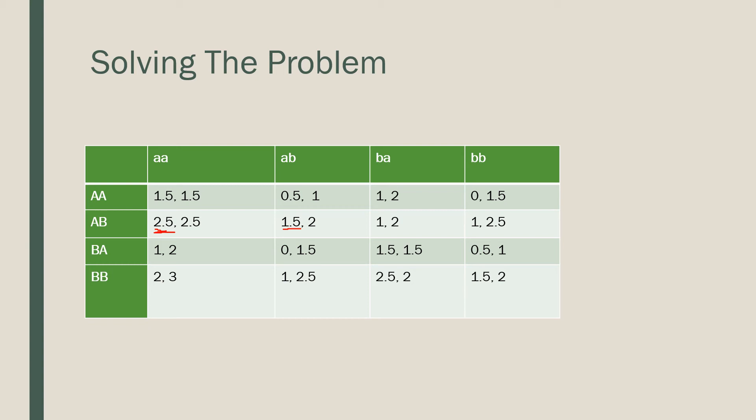Now let's consider if our column player is committed to B, A, and we'll follow this process through. And let's look at B, B — what would our row player's best response be? It would be B, B.